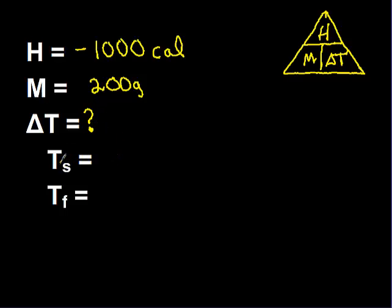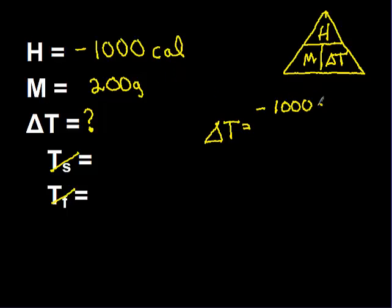If I'm just finding change in temperature, I don't need to worry about starting and final temperature. To solve for change in temperature, I cover up delta T and see it equals heat over mass. So my equation is: delta T equals negative 1,000 — written as grams degrees Celsius instead of calories — divided by 200 grams on the bottom.